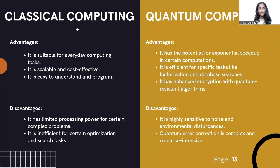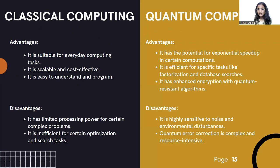Let's see some advantages and disadvantages of classical and quantum computing. Advantages of classical computing: it is suitable for everyday computing tasks, it is scalable and cost effective, and it is easy to understand and program. Disadvantages of classical computing: it has limited processing power for certain complex problems, and it is inefficient for certain optimization and search tasks.